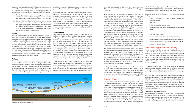Many runways or landing areas require that landings be made while the wind is blowing across rather than parallel to the landing direction — all pilots must be prepared to cope with these situations. The same basic principles and factors involved in a normal approach and landing apply to a crosswind approach and landing. There are two usual methods of accomplishing a crosswind approach and landing: the crab method and the wing-low (side-slip) method. Although the crab method may be easier for the pilot to maintain during final approach, it requires a high degree of judgment and timing in removing the crab immediately prior to touchdown. The wing-low method is recommended in most cases, although a combination of both methods may be used.